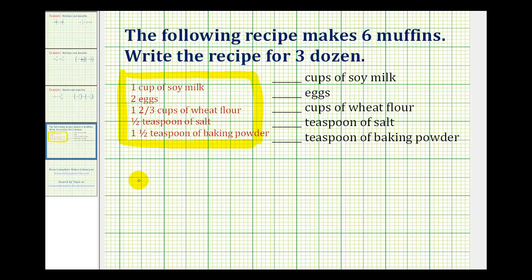So for some background information, one dozen is equal to 12. So if we want three dozen muffins, 12 times three is equal to 36.